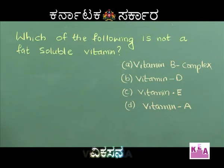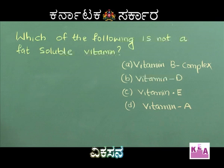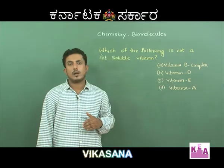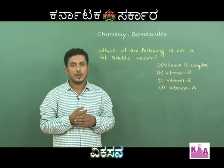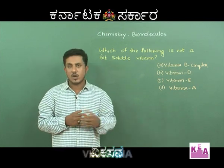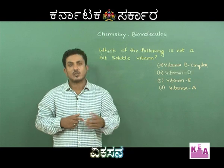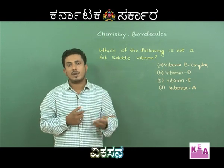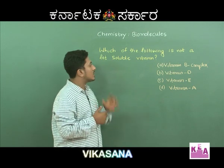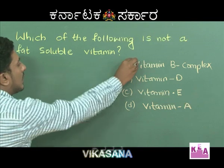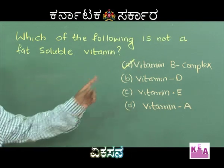Which of the following is not a fat-soluble vitamin? Option A Vitamin B complex, Option B Vitamin D, Option C Vitamin E, Option D Vitamin K. Vitamins are vital organic compounds required for normal growth of an organism. Based on solubility, vitamins are classified into fat-soluble and water-soluble. Vitamins A, D, E, and K are fat-soluble; vitamin B complex and vitamin C are water-soluble. Hence, Vitamin B complex is water-soluble, and Option A is the right answer.